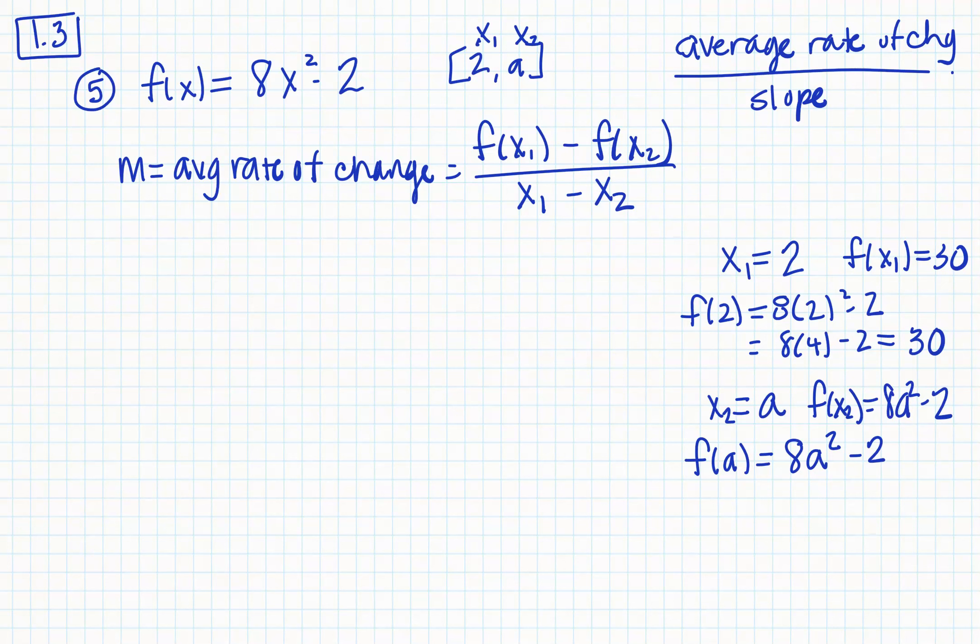Now I did that information so I can come back up here to this formula and plug it in. So f of x1 we've identified as 30 minus parentheses 8a squared minus 2 all over x1 which is 2 minus x2 which is a. Now from this point, we just need to clean things up, do a little bit of algebra clean up.